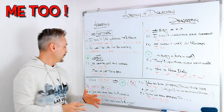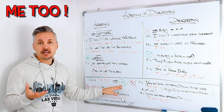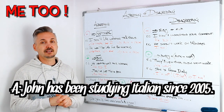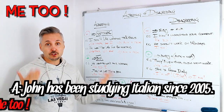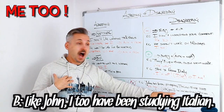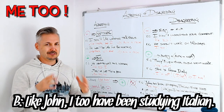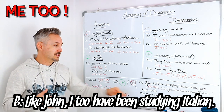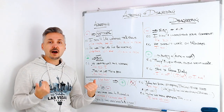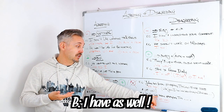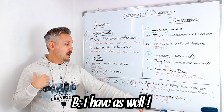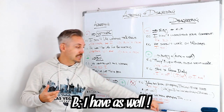Let's look at 'me too.' The statement must be positive to use 'me too.' For example: 'John has been studying Italian since 2005.' You can say 'me too', or 'so have I', or 'like John, I too have been studying Italian.' You can also use 'as well': 'I have as well' — the auxiliary here is 'have' from the present perfect continuous — 'as well' meaning the same as 'too.'